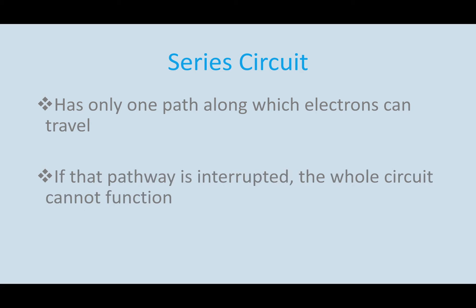If this pathway is interrupted, the whole circuit cannot function. If we think of a Christmas tree and the Christmas lights, if one light bulb went out, the rest of the lights would not work. That meant that they were wired in series, meaning that the pathway was interrupted when one light bulb was burnt, so the electrons couldn't flow past that. The entire string of Christmas lights was ruined if one light bulb went out, or you had to go through and find that one light bulb that didn't work.